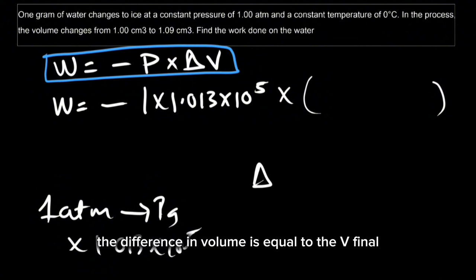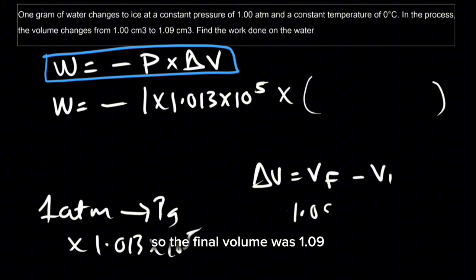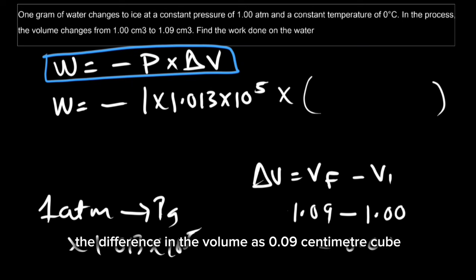The difference in volume is equal to V final minus V initial, which is the final volume subtracted by the initial volume. So the final volume was 1.09 subtracted by the initial volume which is 1.00. So we got the difference in the volume at 0.09 centimeter cube.